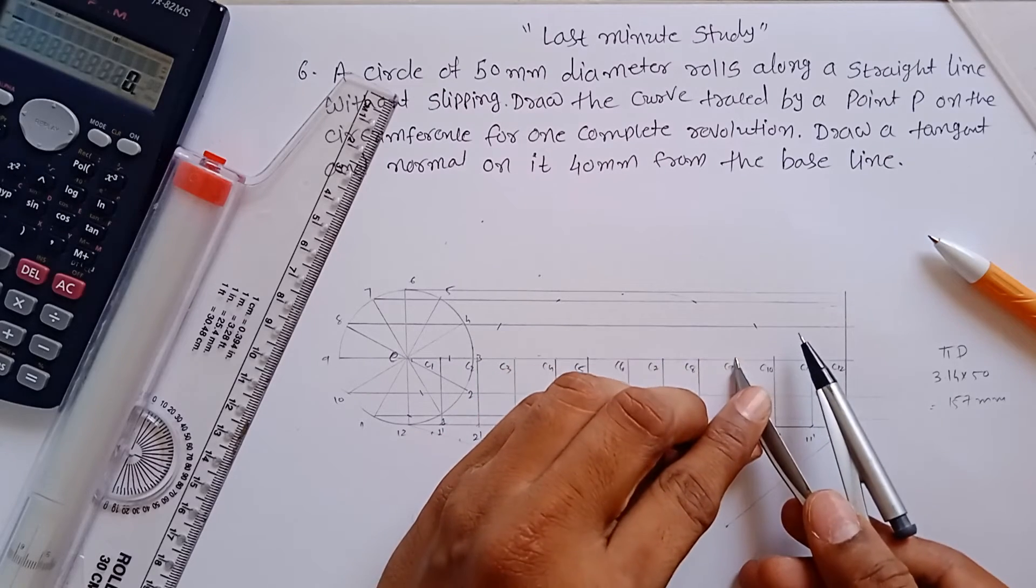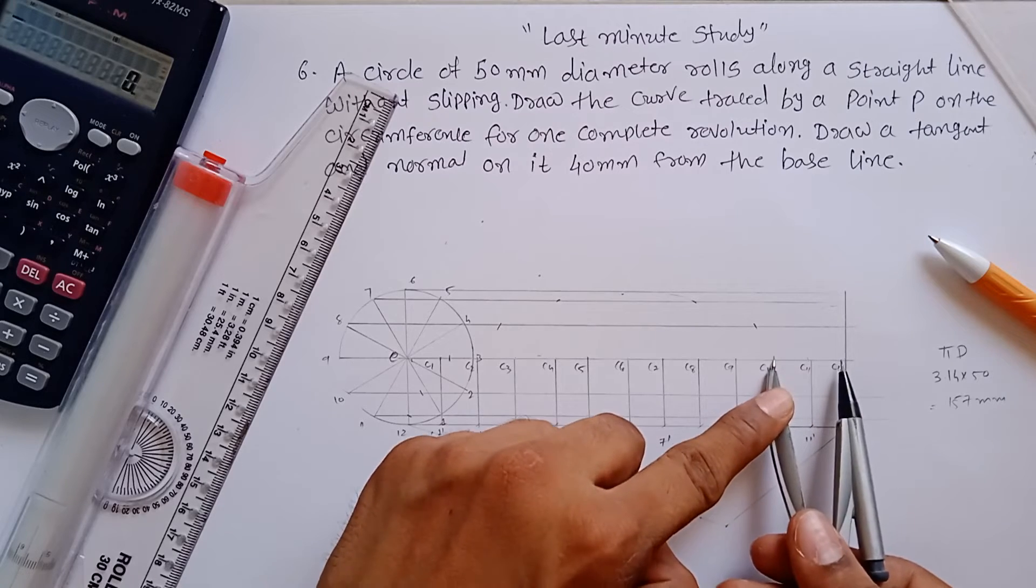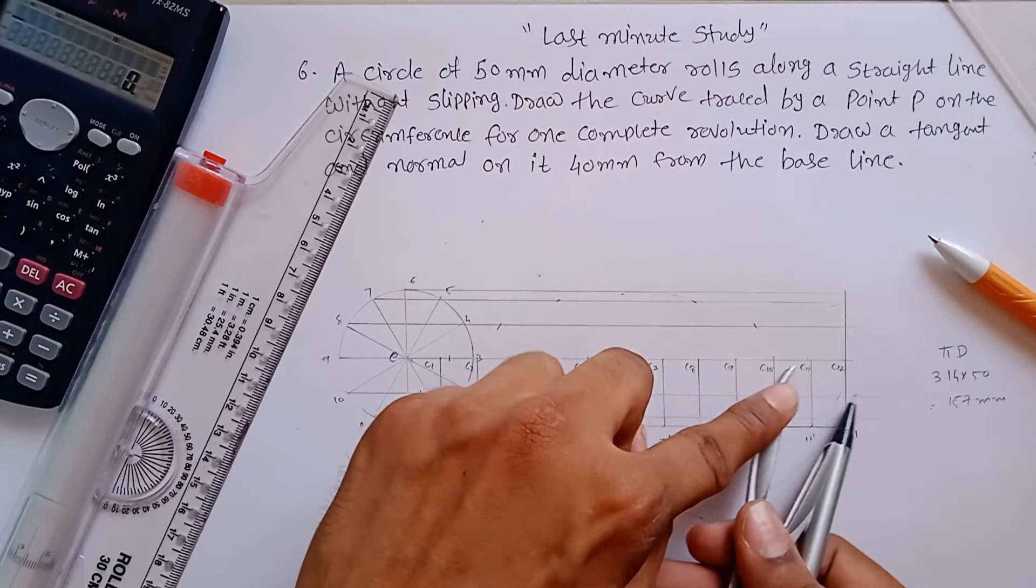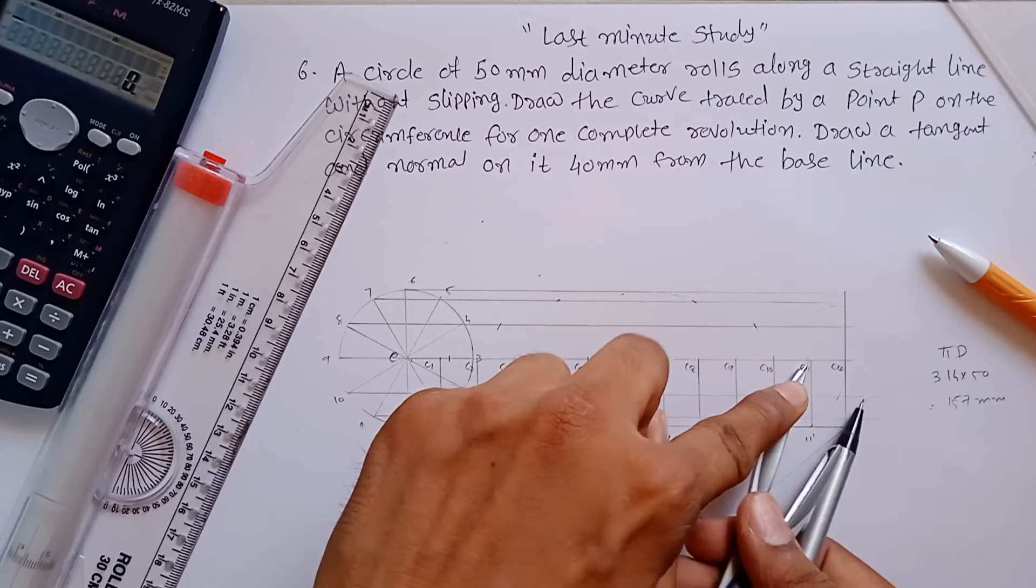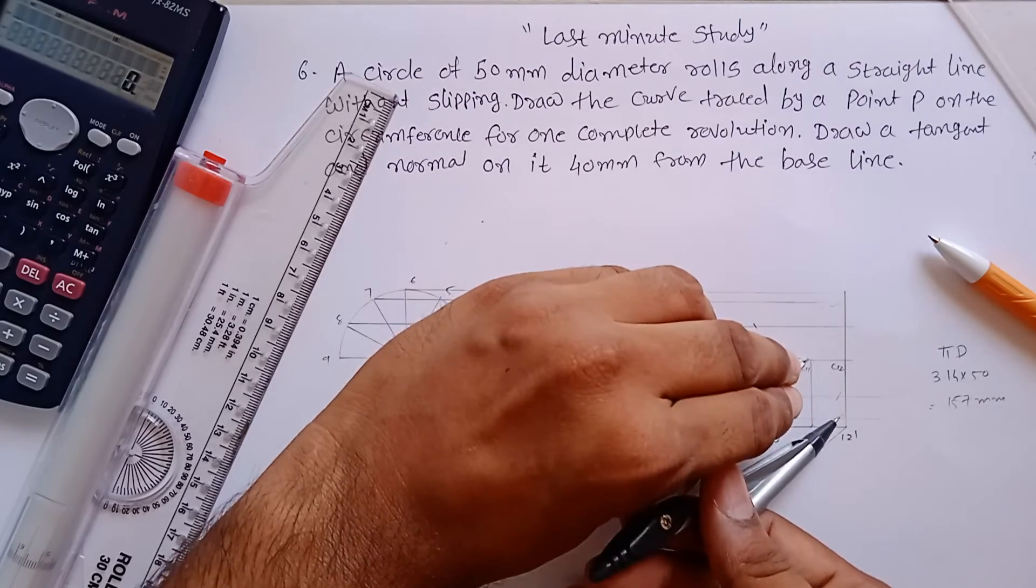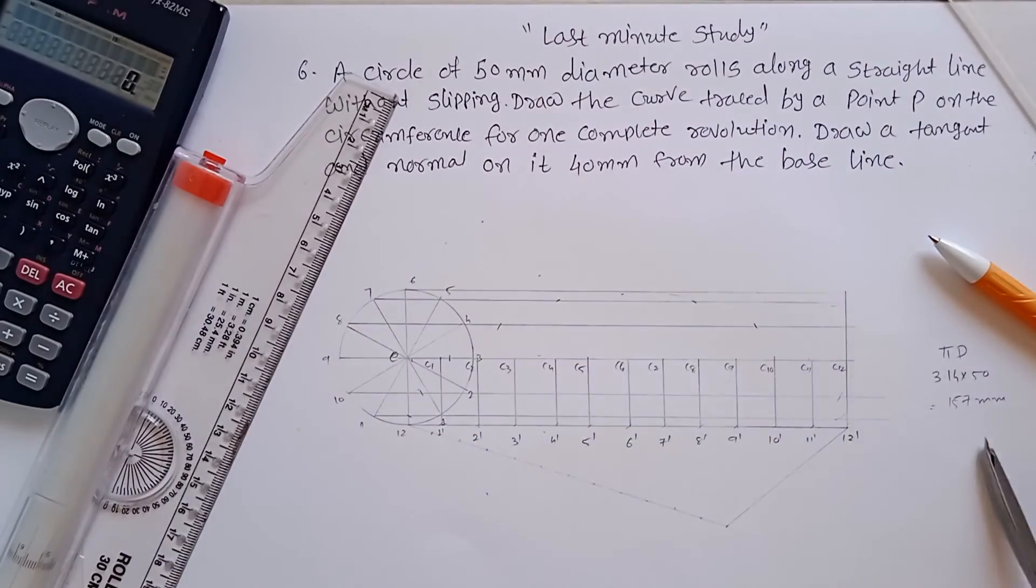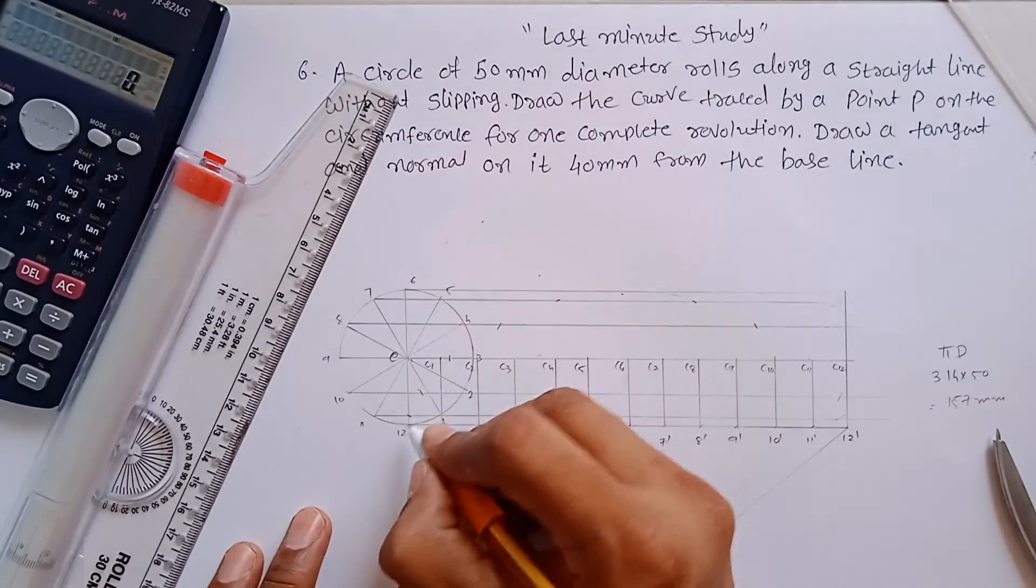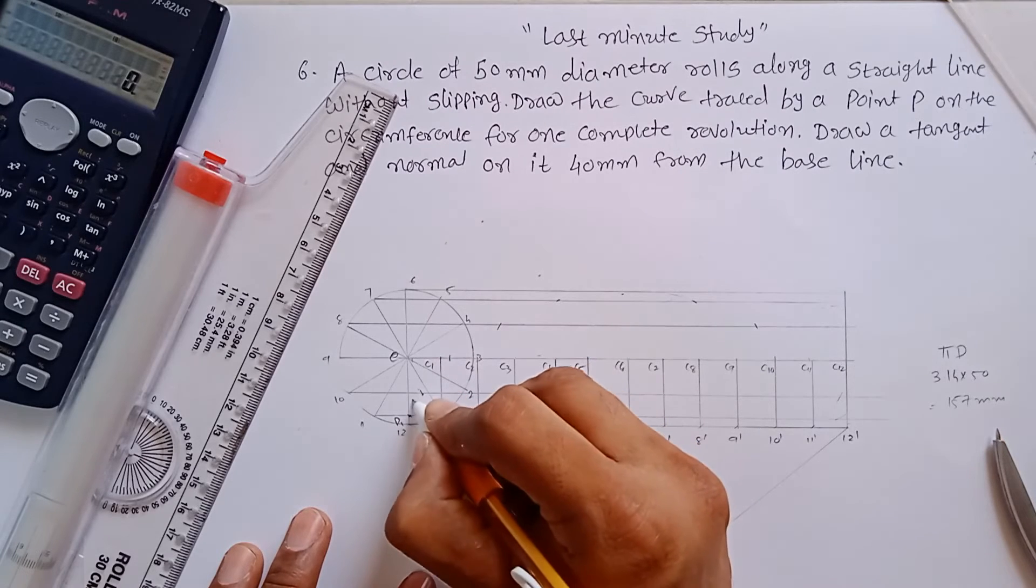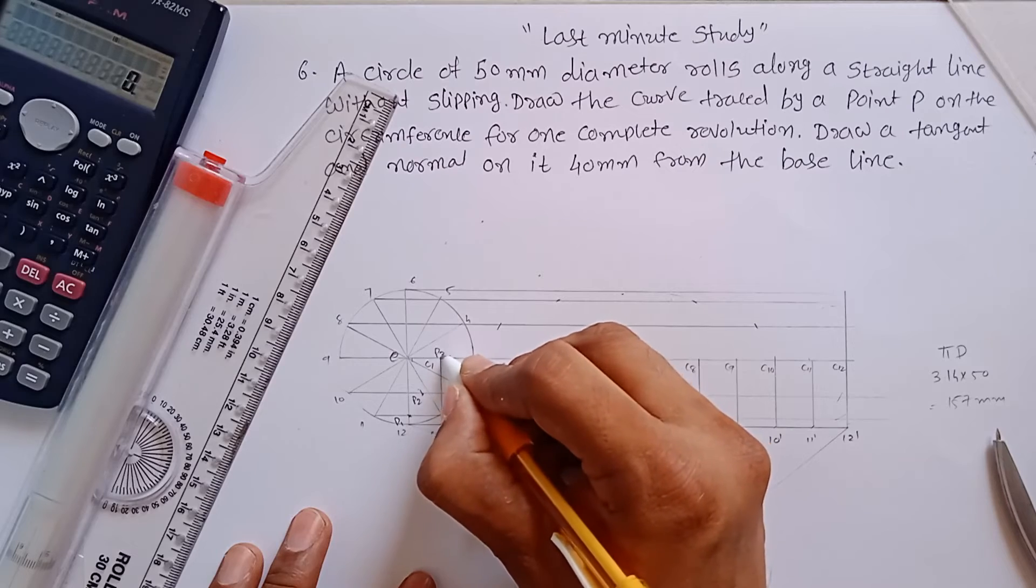8, 9, 10, 11, and you can see the 12 is on the 12th point. This is how you got your points. This point is your P1, P2. You have to write down the names for better understanding.